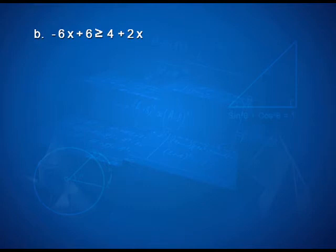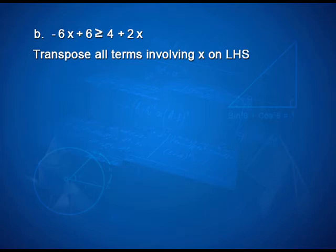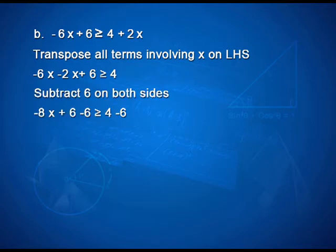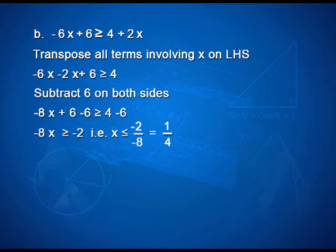Let us solve one more inequality: minus 6x plus 6 is greater than or equal to 4 plus 2x. Transpose all x terms to the left and constants to the right: minus 6x minus 2x plus 6 is greater than or equal to 4, giving minus 8x plus 6 minus 6 is greater than or equal to 4 minus 6. Therefore minus 8x is greater than or equal to minus 2, so x is less than or equal to minus 2 upon minus 8, that is x is less than or equal to 1 by 4.